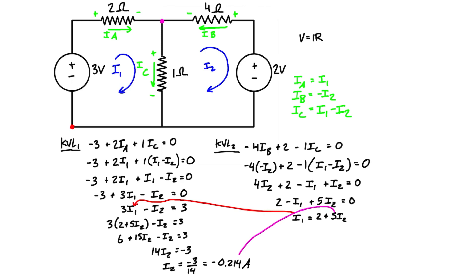But we can pretty much just take that and then plug it right back into this equation, so we have i1 is equal to 2 plus 5 times negative 0.214. And we find that i1 is equal to 2 minus 1.07, and i1 is ultimately equal to positive 0.93 amps.